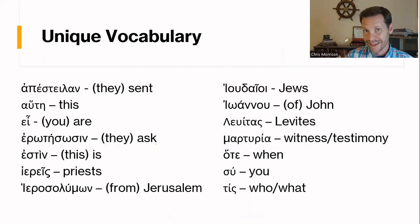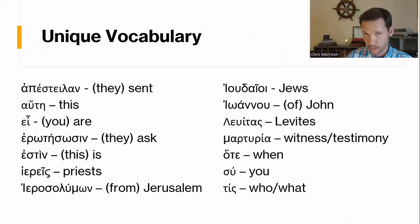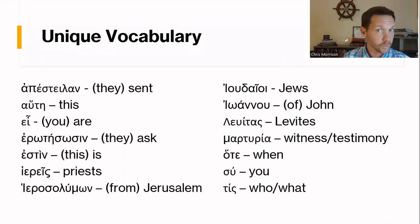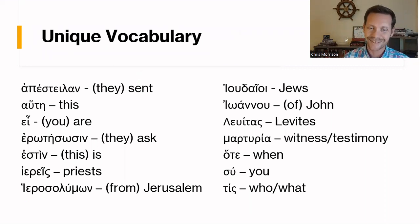Now let's look at the new vocabulary. Apesteilan means 'they sent.' Hautē — and we're going to talk about that — is a nominative pronoun meaning 'this.' Ei means 'you are,' as in 'I am, you are, he/she/it is.' Erōtēsōsin means 'they ask.' Estin means 'he is' or 'it is.' Hiereis means 'priests,' plural. Hierosolumōn means 'Jerusalem' or in this case 'from Jerusalem' because it's in the genitive. Ioudaioi means 'the Jews.' Iōannou means 'John' or 'of John' in the genitive. Leuitai means 'Levites.' Marturia is 'a witness' or 'testimony.' Hote means 'when.' Su means 'you.' And tis means 'who' or 'what.'